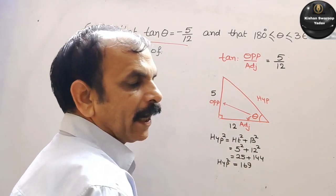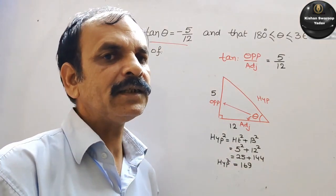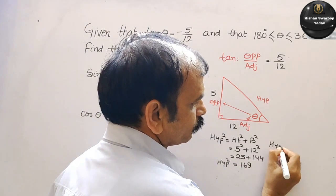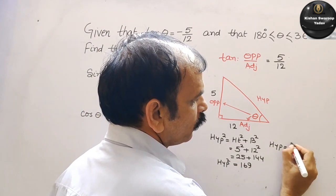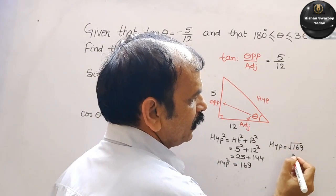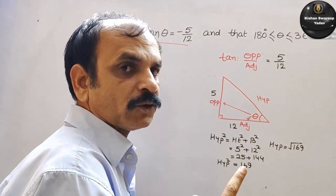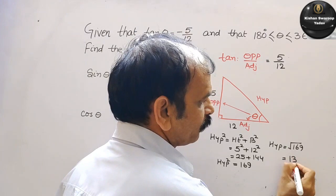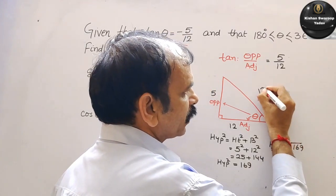So what is hypotenuse? Hypotenuse is root over 169. So 169 is the perfect square of 13. We can say it is 13. So hypotenuse is now 13.